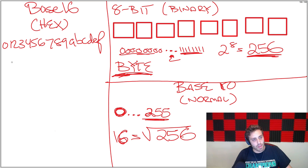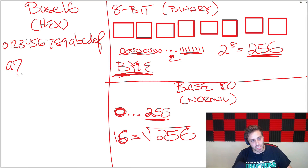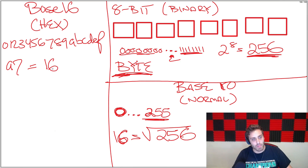If you look at a number like A7 — the hex number A7 — this is saying: this is the 16s slot and this is the 1s slot. A is 10 in base 10, so that means you have 10 sixteens and then 7 ones. The equivalent in base 10 would be the number 167 for A7.